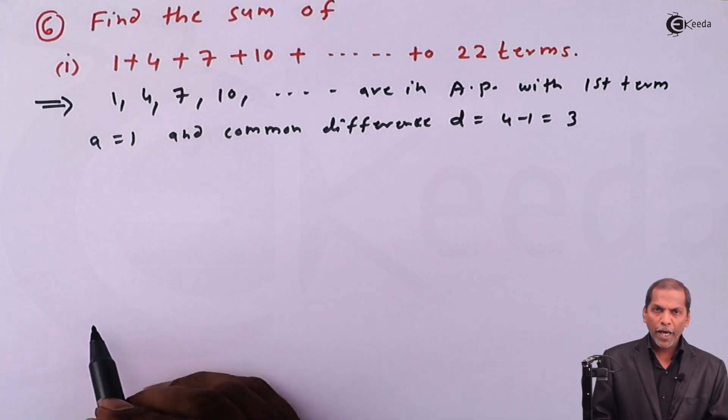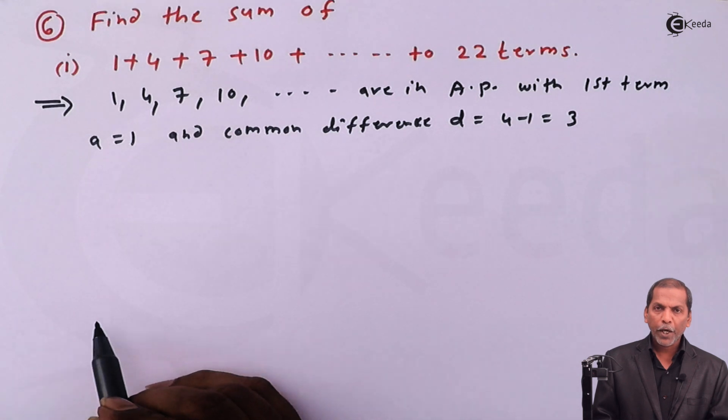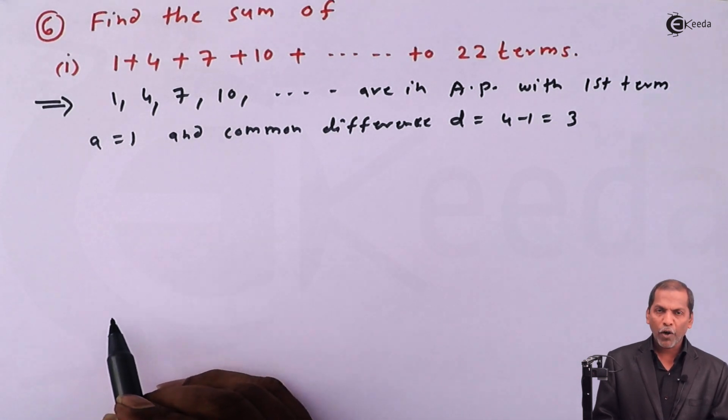In this case we have to find the sum up to 22 terms, it means we know the value of n, that is 22.